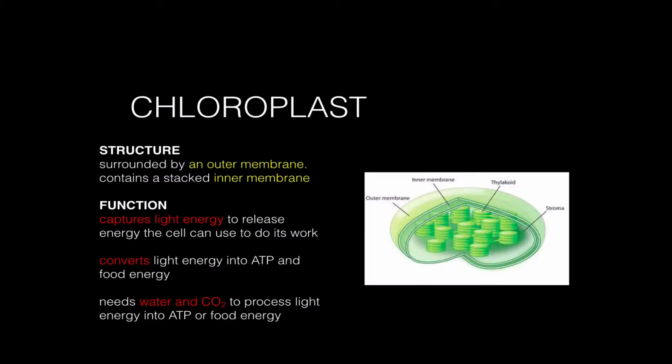The other transformer inside some eukaryote cells — called plant cells — are chloroplasts. Chloroplasts are only found in plant cells; animal cells do not have them. The structure is very similar to a mitochondrion: you have an outer membrane surrounding an inner membrane, and this inner membrane is folded into stacks. They kind of look like green pennies. This is a stack of that inner membrane, folded up, and they're interconnected. The function of the chloroplast is to capture light energy and release this energy in a form that the cell can use to do work.